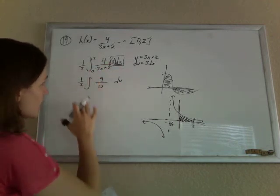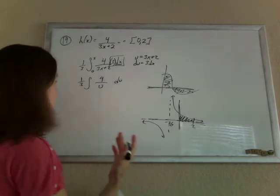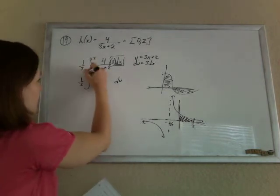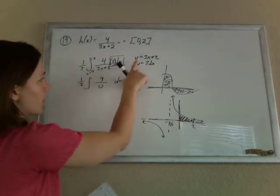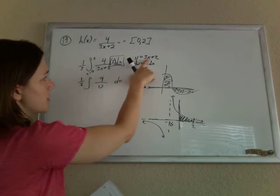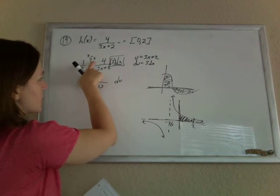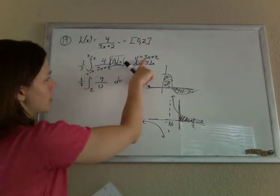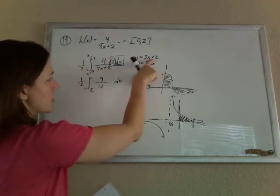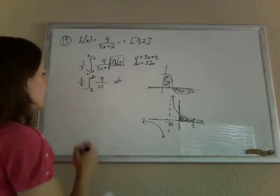I haven't changed my limit. Let's go ahead and change the limit. So if x is 0, then u is 3 times 0 plus 2, so 2. And if x is 2, then u is 3 times 2 plus 2, so 6 plus 2 is 8. And so now, the reason I like this, my u substitution works.